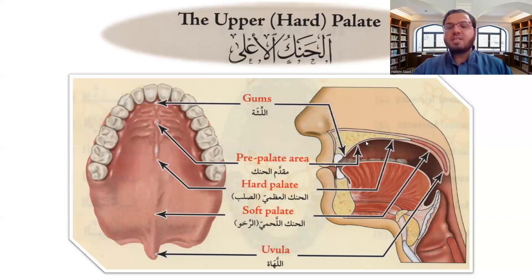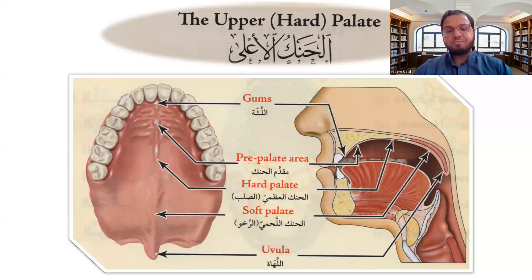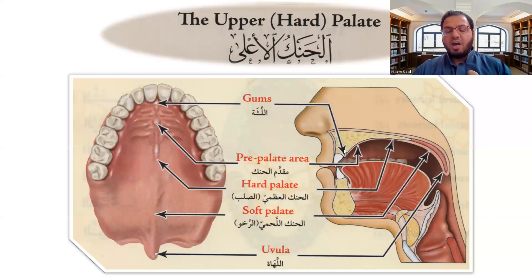How to understand? We are talking about the upper, inside your mouth, the upper one. It started with the hard — this is called the hard palate. From here to here, all of this is called hard palate. But the hard palate is divided into different parts.